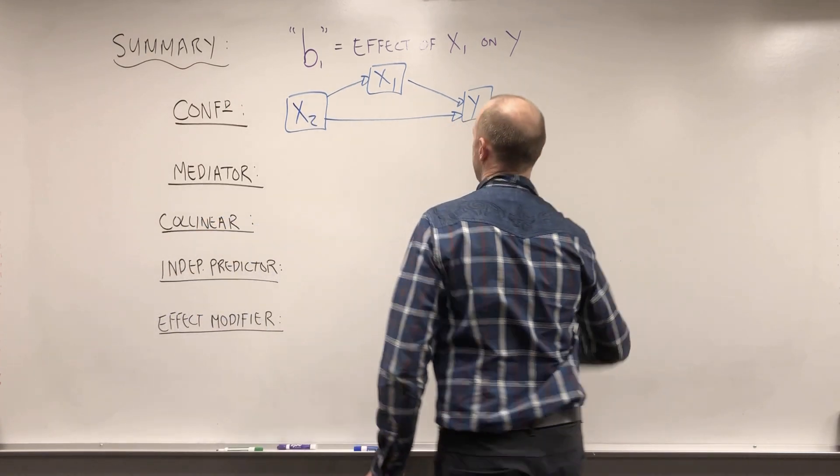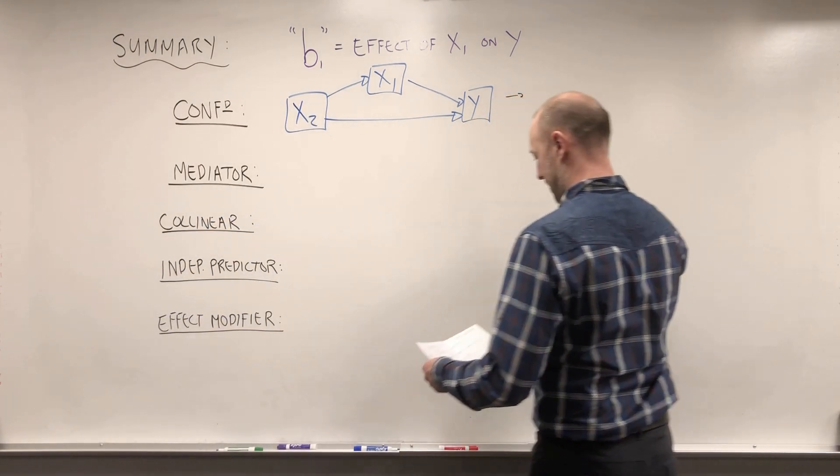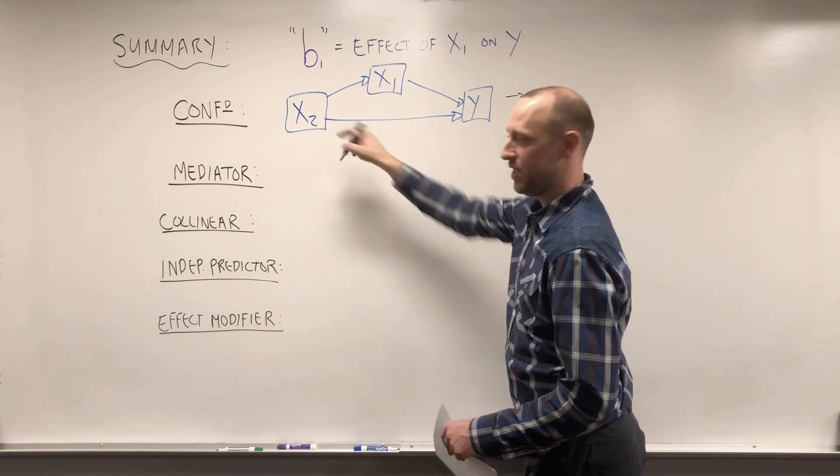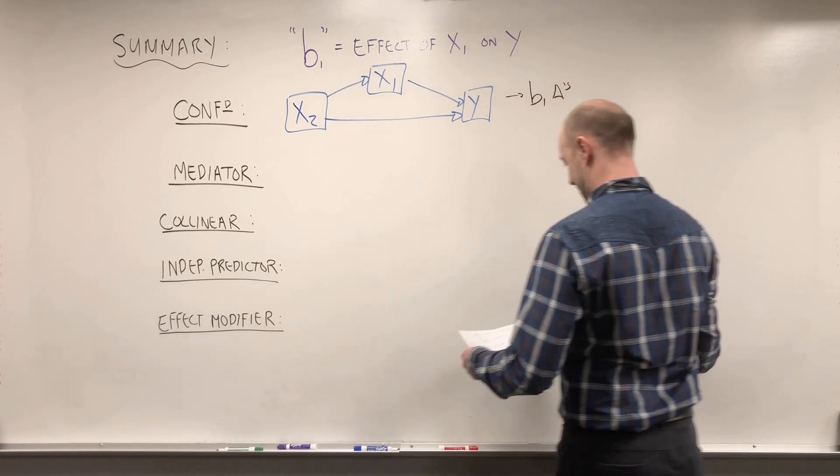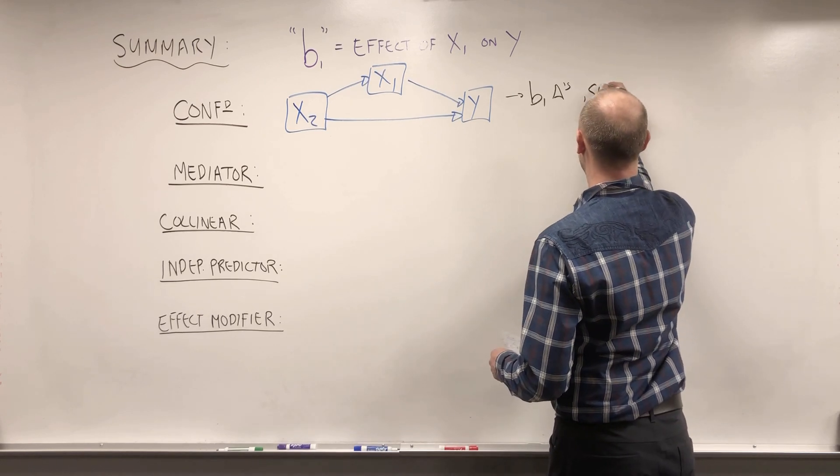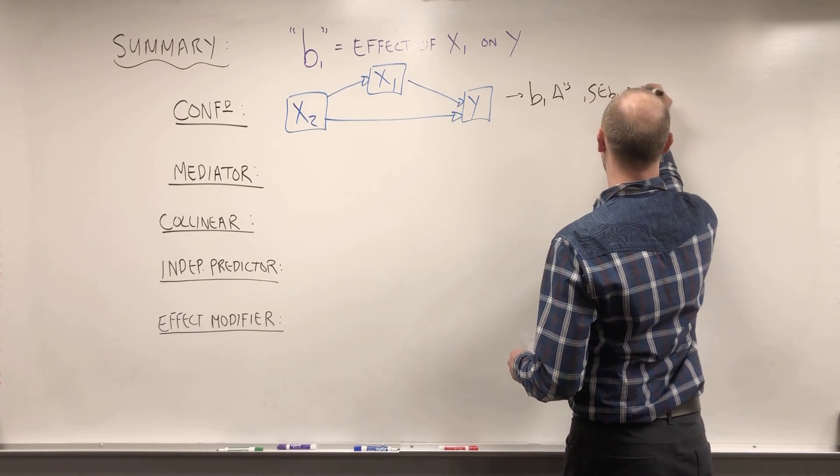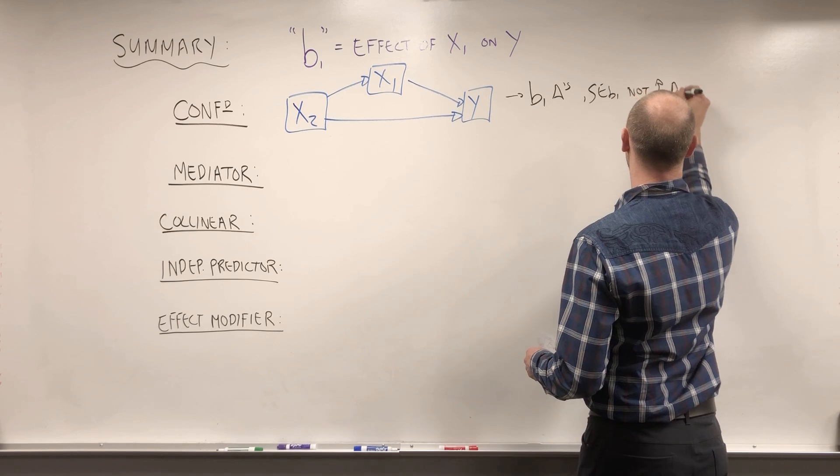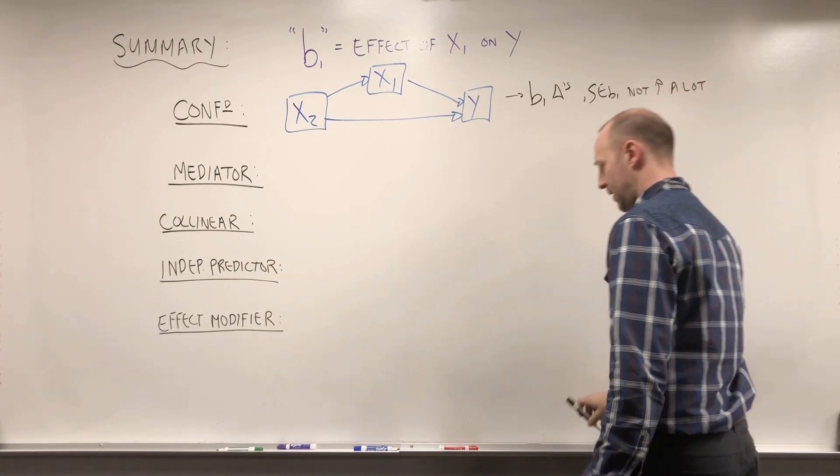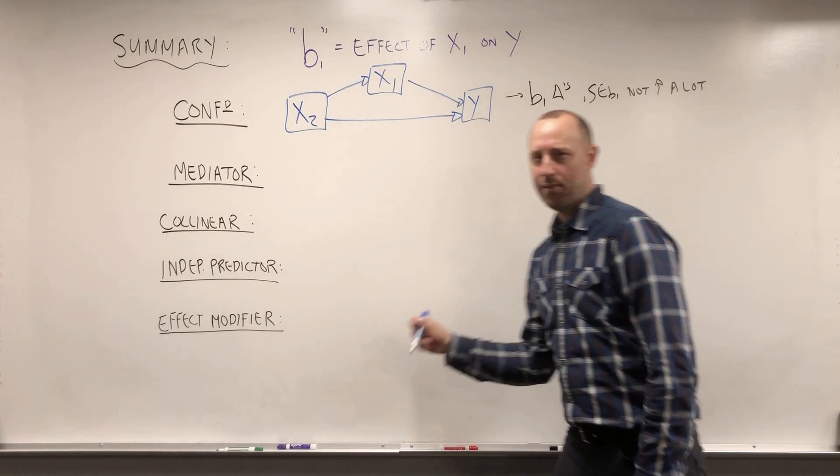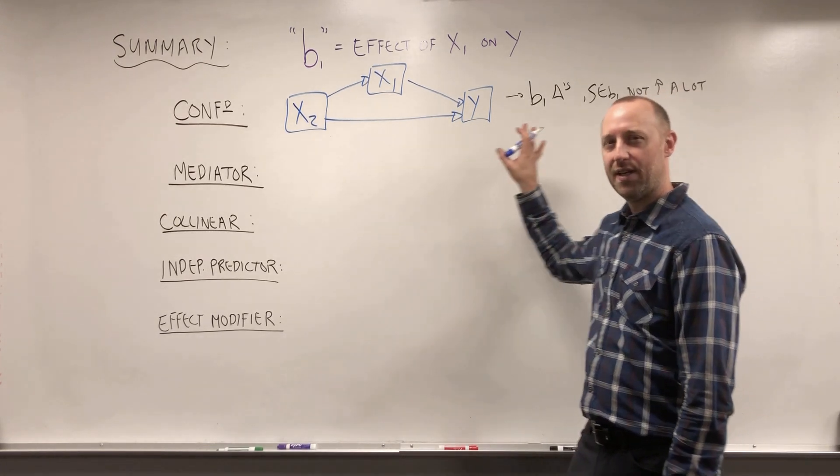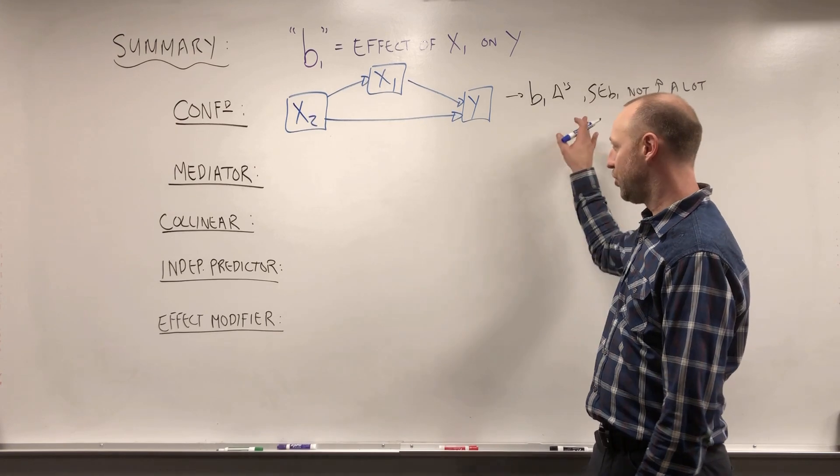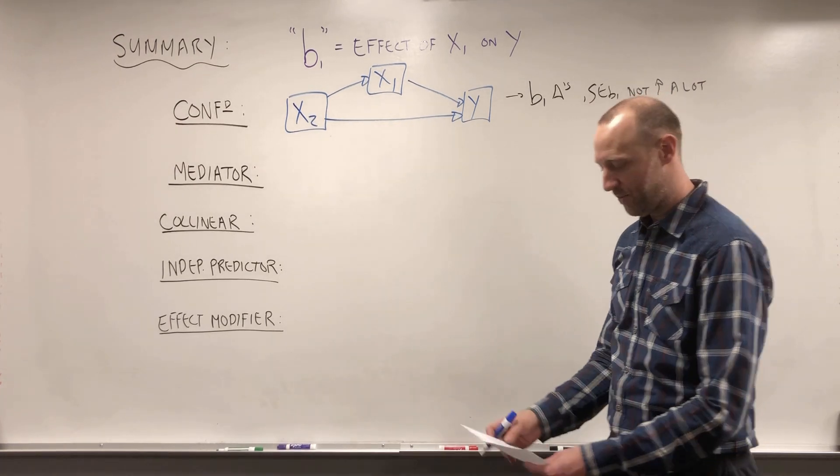We saw that ways we can identify this is that when we adjust for X2, B1 changes and the standard error of B1 does not increase a lot. And again, a reminder, the concept was more important than what's happening numerically. But this can help us identify that as well or numerically verify the way confounders behave.